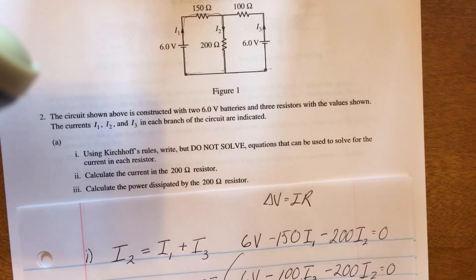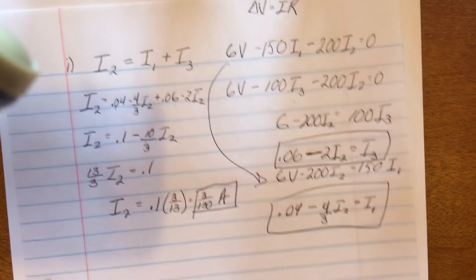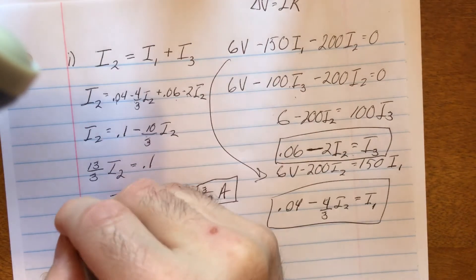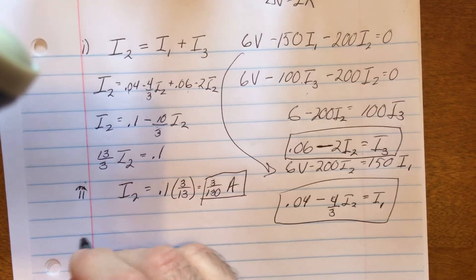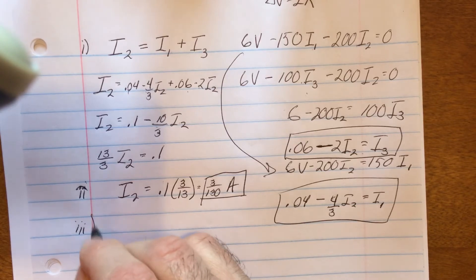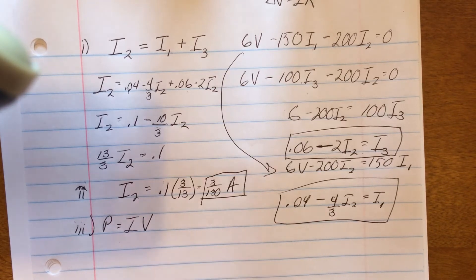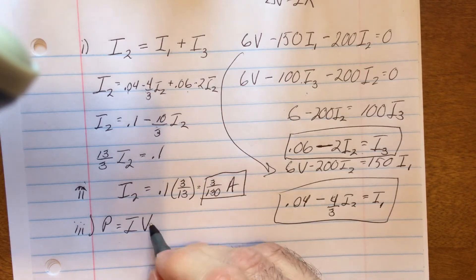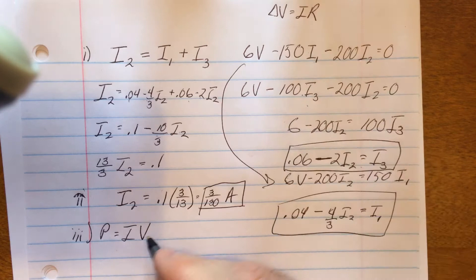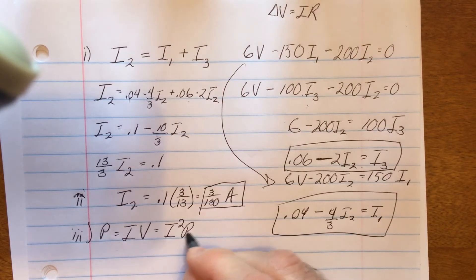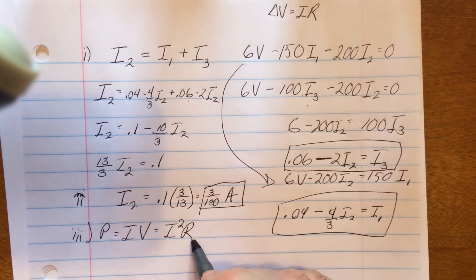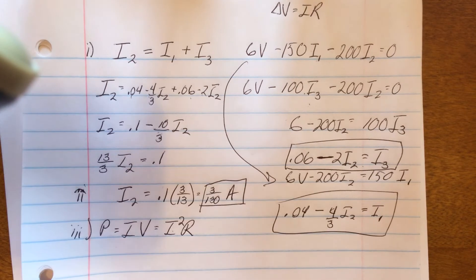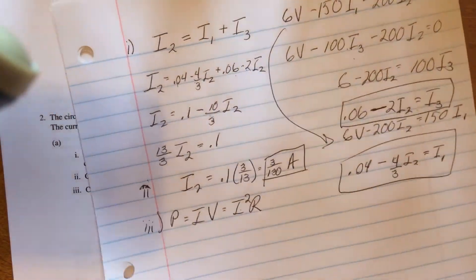Moving on to the next part: calculate the power dissipated by the 200-ohm resistor. Power is just current times voltage. I also know that voltage is current times resistance, so power can be I-squared times R. I know the current going through that resistor and I know its resistance, so I would just plug those in and solve. I trust you guys can operate a calculator and do that on your own.